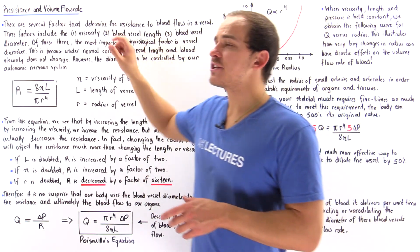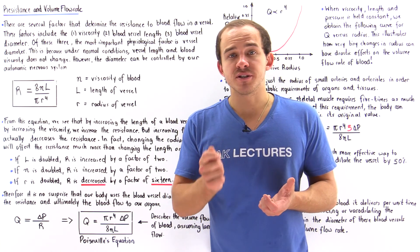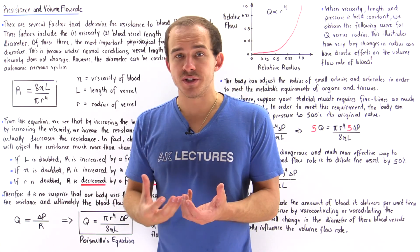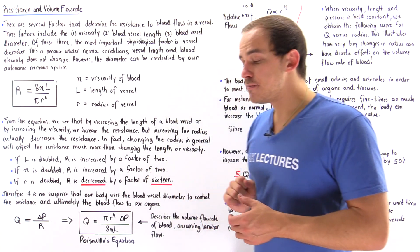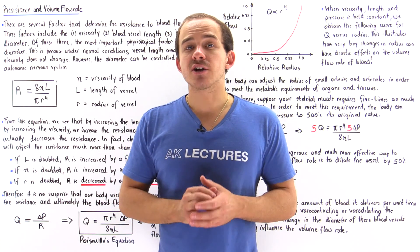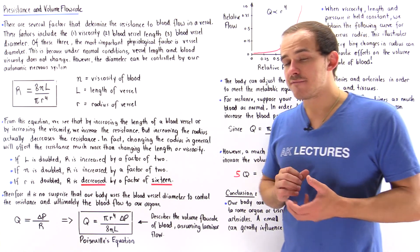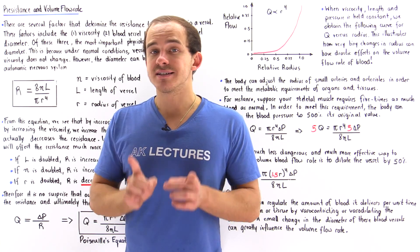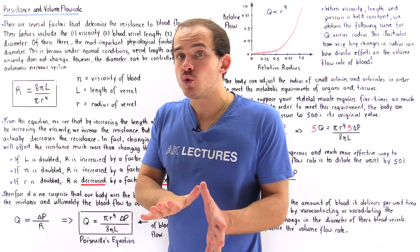Factor number two that affects resistance is the length of our blood vessel, and factor number three is the radius or diameter of that particular blood vessel. By far the most important physiological factor that influences resistance is the blood vessel diameter, because vessel length and viscosity do not change considerably under normal conditions. But because our autonomic nervous system controls the smooth muscle inside the blood vessel, the diameter and radius can easily be controlled by our body.